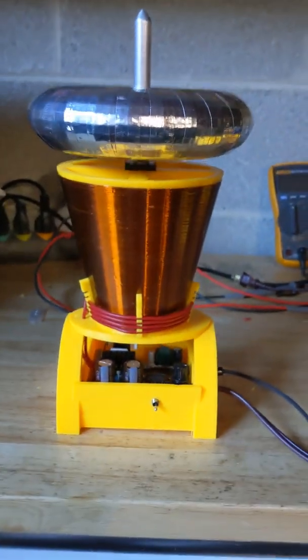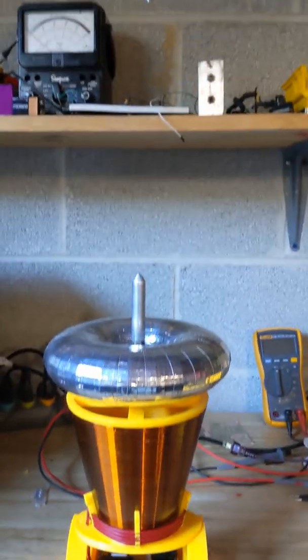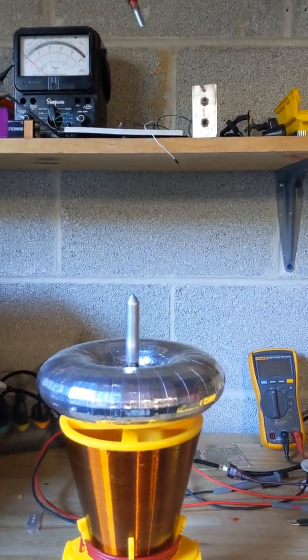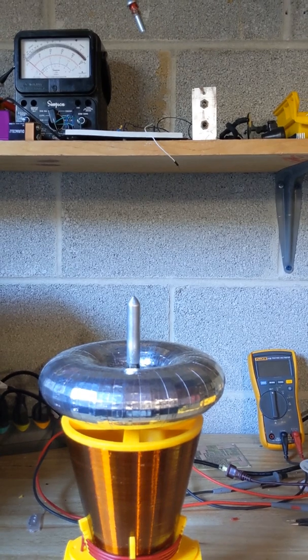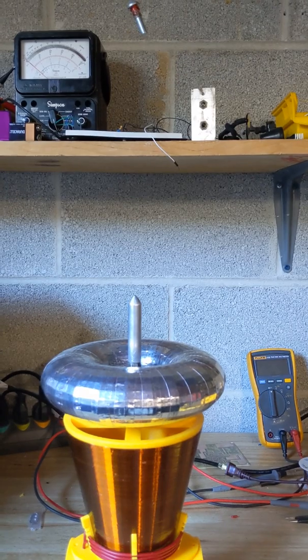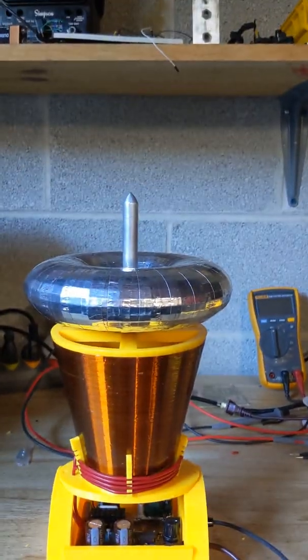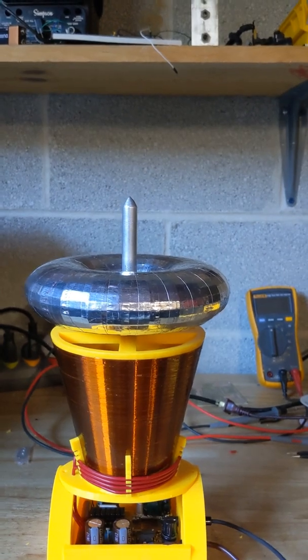This coil has a 5 inch tall secondary and as I'll show you in a minute it can make in excess of 9 to 10 inch sparks. The bottom of that screw is a little above 9 inches and the top of that screw is about 10 and a half inches away from the point there, the discharge breakout point.